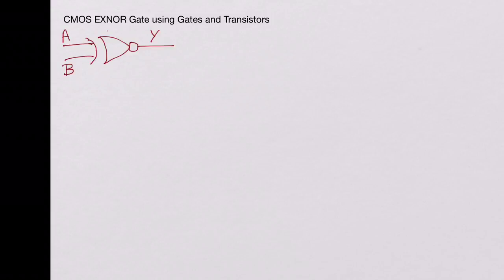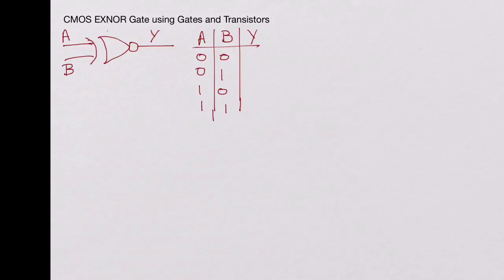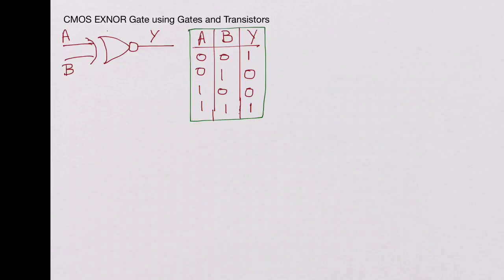Let's start with the truth table for this gate. We have inputs A and B and output Y, with all input combinations: 0-0, 0-1, 1-0, and 1-1. For the exclusive NOR gate, the output is high when both inputs are the same; otherwise you get zero — it is the invert of the exclusive OR gate.